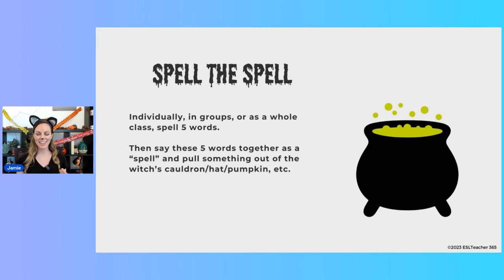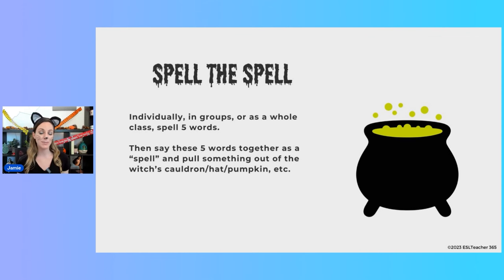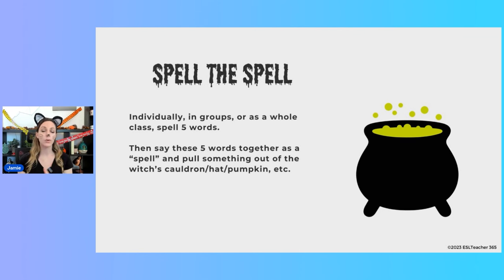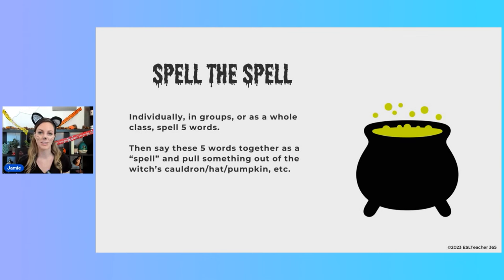Next we have Spell the Spell, where your students get some spelling practice and you'll be repeating the word — great for pronunciation too. You can play individually, in groups, or as a whole class. Spell five different words — for example with little learners: bat, cat, hat, rock, and sock. I recommend having something like a cauldron, a witch's hat, or a pumpkin with little things inside to pull out as a surprise after you say your spell.